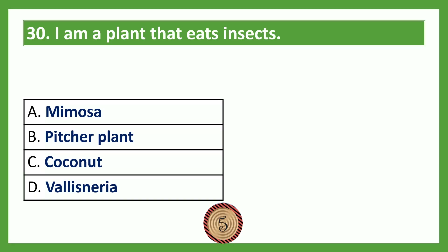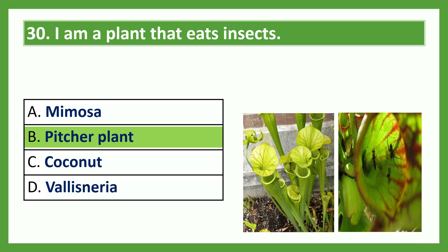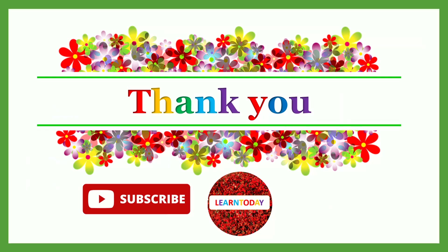I am a plant that eats insects. Option A: mimosa; Option B: pitcher plant; Option C: coconut; Option D: Vallisneria. The answer is Option B, pitcher plant. In this picture, we can see the pitcher plant. Please remember to like, share and subscribe. Thank you.